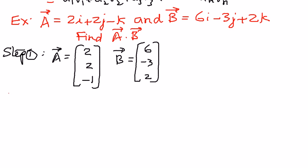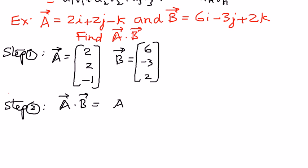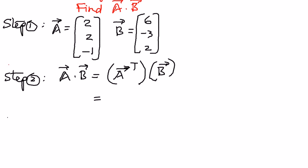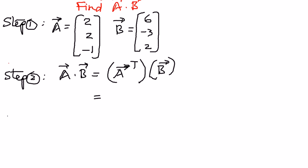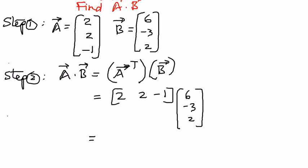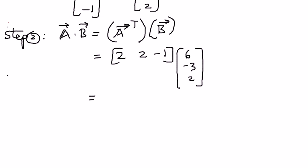So, according to the procedure we just explained — step 2 — vector a dot vector b is going to be equal to vector a transpose times vector b. We write the column matrix of a as a row matrix: 2, 2, negative 1, times the column matrix b: 6, negative 3, 2.